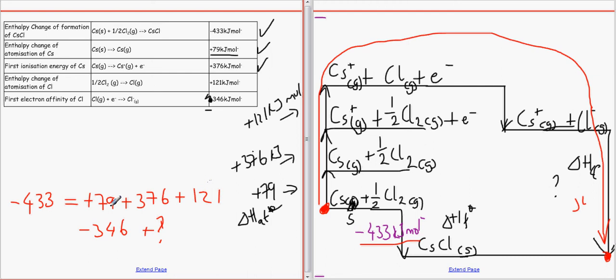So if we add all of this together, it makes, I'm going to add that very quickly, it would make plus 230. So plus 230 plus that question mark or the delta H of enthalpy should equal this. So we need to ask ourselves what number do we need to add to 230 to make minus 433.